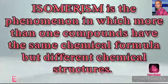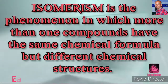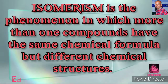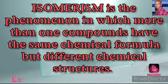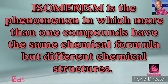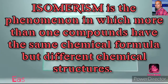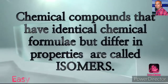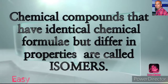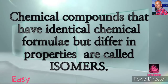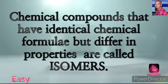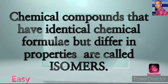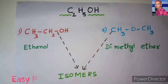Isomerism is the phenomenon in which more than one compound has the same chemical formula but different chemical structures. Chemical compounds that have identical chemical formulae but differ in properties are called isomers.